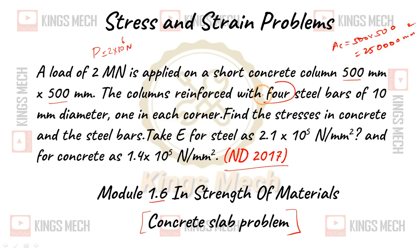The column is reinforced with 4 steel bars of 10 mm diameter. Diameter which is equal to 10. Like in an earlier problem we saw, we can take pi by 4 D square into 4 and the 4s cancel.